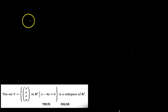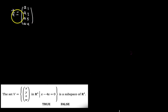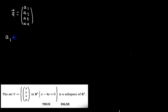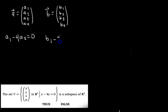To solve this question, I'm going to define two vectors, A and B, such that they're in the set V. Vector A has components A1 through A4, and since A is in set V, we have A1 minus 4A3 equals 0. Similarly, vector B has components B1 through B4, and since B is in set V, we have B1 minus 4B3 equals 0. We know both of these equations are true by definition.